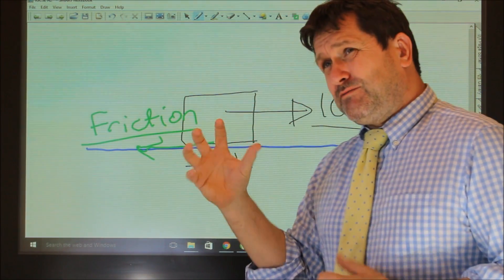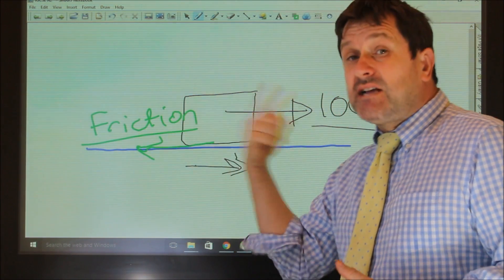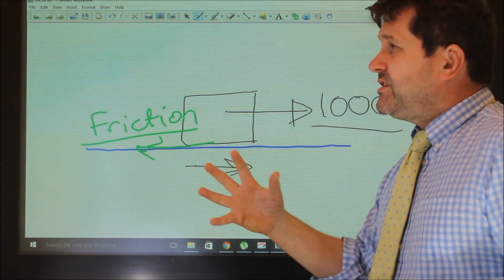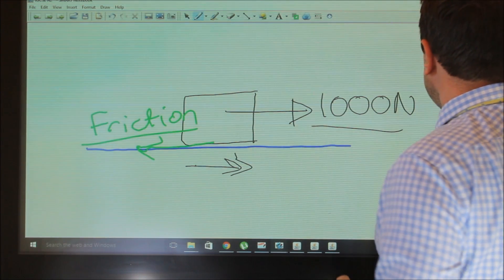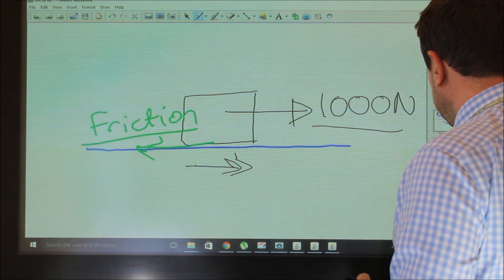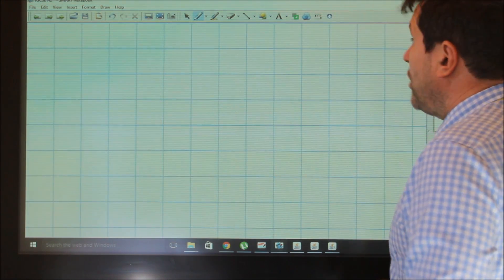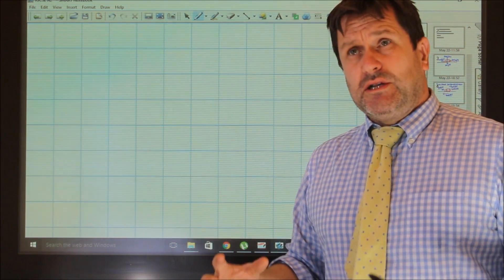So friction is always in the opposite direction. Now we'll look at these in a much more quantitative way in the next session. But before I do that, I just need to look at something else. We just need to look at Hooke's Law.